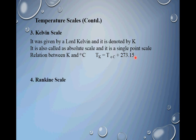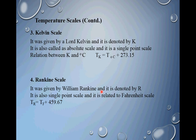Another single-point scale is the Rankine scale, given by William Rankine, and it is denoted by R. It is related to the Fahrenheit scale using: temperature in Rankine equals temperature in Fahrenheit plus 459.67. So these are all four temperature scales which we use for measurement of temperature.